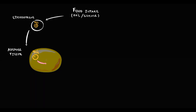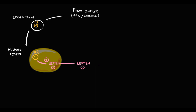And because it is adipose tissue that produces leptin, the larger is the adipose tissue mass, the higher is the production of leptin. So basically, increase in triacylglycerols in adipose tissue induces the production of leptin into the blood. The normal level of leptin in the blood is between 2 to 5.6 for males and 3.7 to 11.7 for females.